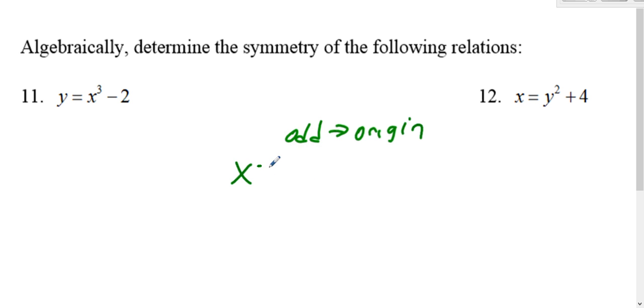If it's x equals y to all evens or y equals x to all evens, it has axis symmetry. If it's x equals, it's x-axis. If it's y equals, it's y-axis. And if it's mixed evens and odds, it's got no symmetry.